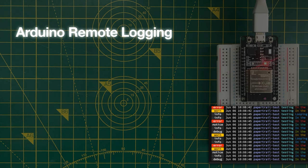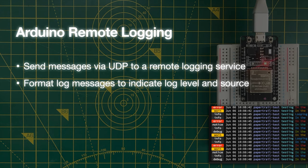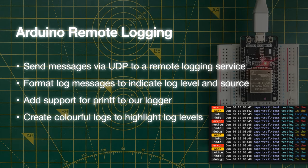Hi everyone, welcome back to another video. In this video we'll be looking at the Arduino, in particular the ESP32, but this should be general to any Arduino that supports Wi-Fi or Ethernet. What we'll be doing is remote logging. This is particularly useful if your device is embedded and you can't easily connect a serial cable to it. In the coding session we're going to be sending messages to a remote logging service using UDP, formatting the messages to indicate a log level and a source, adding support for printf to our logger so we can do formatted printing, and changing the colour of the log messages to highlight if they are errors, warnings, or just general debug information.